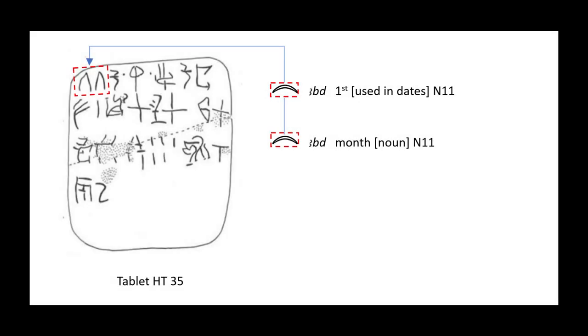And next, let's look at one more. Here we see the same Linear A symbol, representing hieroglyph N11, used twice, because the Middle Egyptian word for month was the same as the Middle Egyptian word for first. So we therefore have 'first month' at the start of this tablet. Interesting stuff, Mark — another example to demonstrate your case.